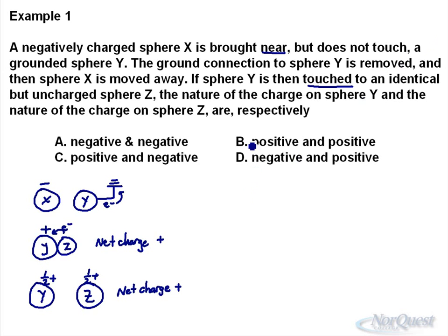So in this case, the nature on Y and Z should both be positive, not as much positive as just Y itself in the second scenario but a little bit positively charged on Y, a little bit positively charged on Z to give us a total charge of what we had on Y originally.